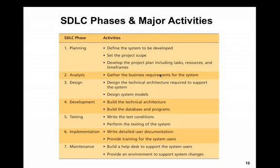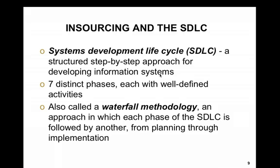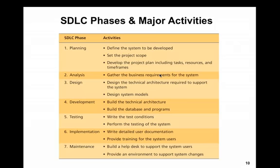The development lifecycle is kind of like project management, but it's managing the development of software specifically. You break it out like a project plan — those seven steps are activities that need to be performed. It standardizes things and makes it almost like a template for the development team to follow. In step one, the planning stage, you do feasibility studies, forecasting, estimating, costing, and planning. You define the system to be developed, set the project scope — what features it will have — and develop the plan including tasks, resources, and time frames.